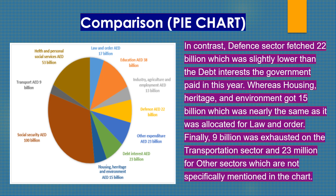In contrast, the defense sector fetched 22 billion, which was slightly lower than the debt interest the government paid in this year. Whereas housing, heritage and environment got 15 billion, which was nearly the same as it was allocated for law and order. Finally, 9 billion was exhausted on the transportation sector and 23 billion for other sectors which are not specifically mentioned in the chart.